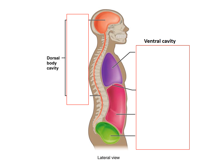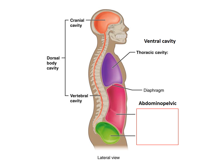We can also organize the body based on cavities. There are two major cavities: the dorsal and the ventral. The dorsal cavity is made up of two separate cavities — the cranial cavity, which is superior and contains the brain, and the vertebral cavity, which is inferior and contains the spinal cord. The ventral cavity contains the thoracic cavity, which holds the heart and lungs, and the abdominal pelvic cavity, which contains the abdominal and pelvic cavities. These cavities are important ways for us to organize the body.